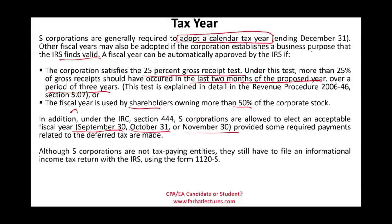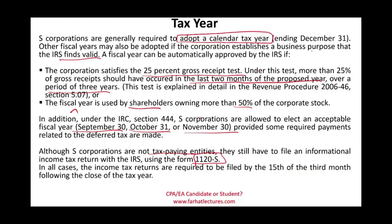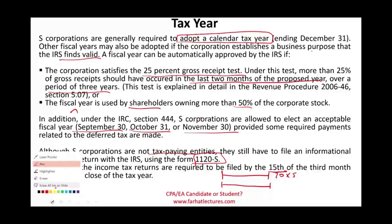Although S corporations are not tax-paying entities, they must still file an informational return — Form 1120-S — reporting revenues and expenses, since they must report ordinary income to shareholders. The income tax return must be filed by the 15th of the third month following the close of the tax year, which is March 15th for calendar-year corporations.